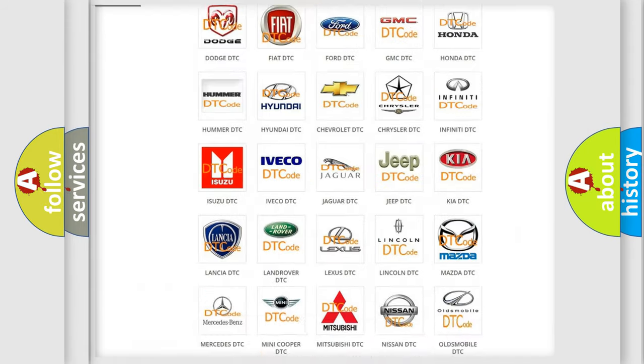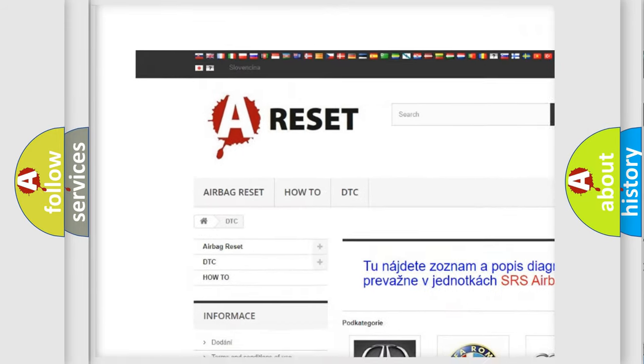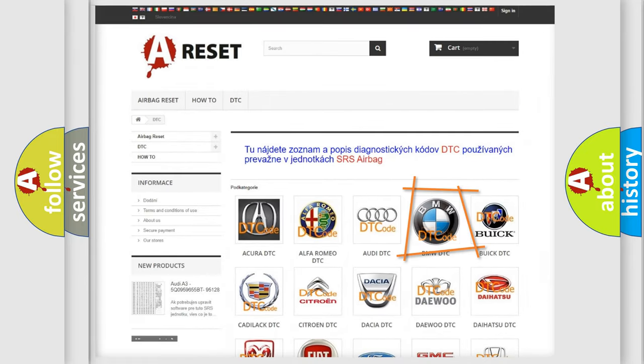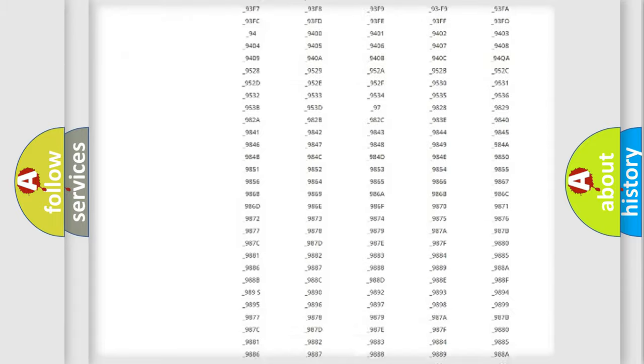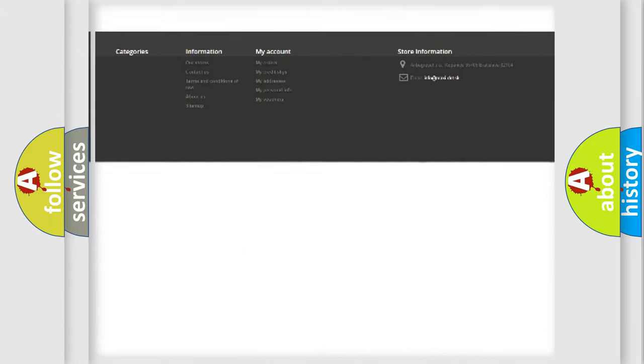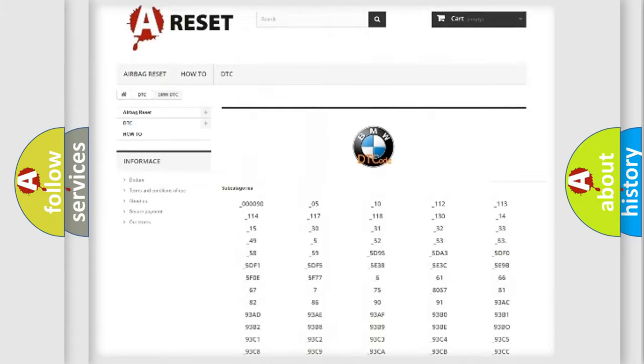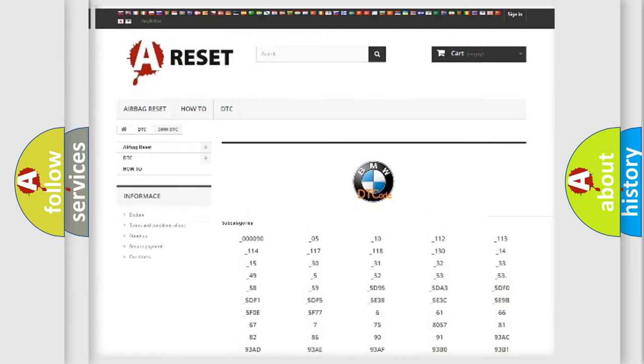Our website airbagreset.sk produces useful videos for you. You do not have to go through the OBD2 protocol anymore to know how to troubleshoot any car breakdown. You will find all the diagnostic codes that can be diagnosed in BMW vehicles, and also many other useful things.